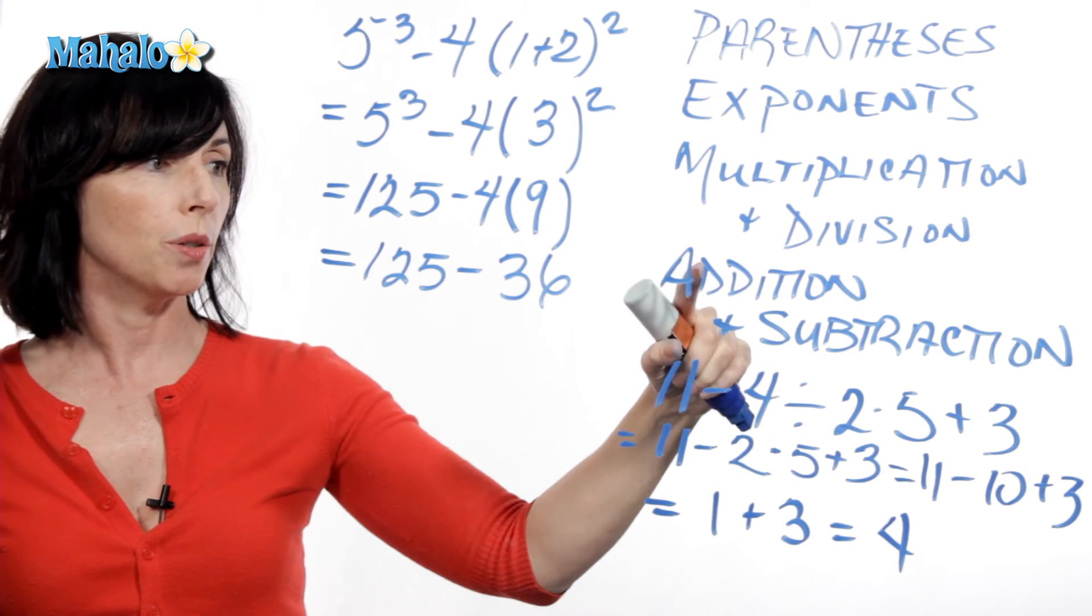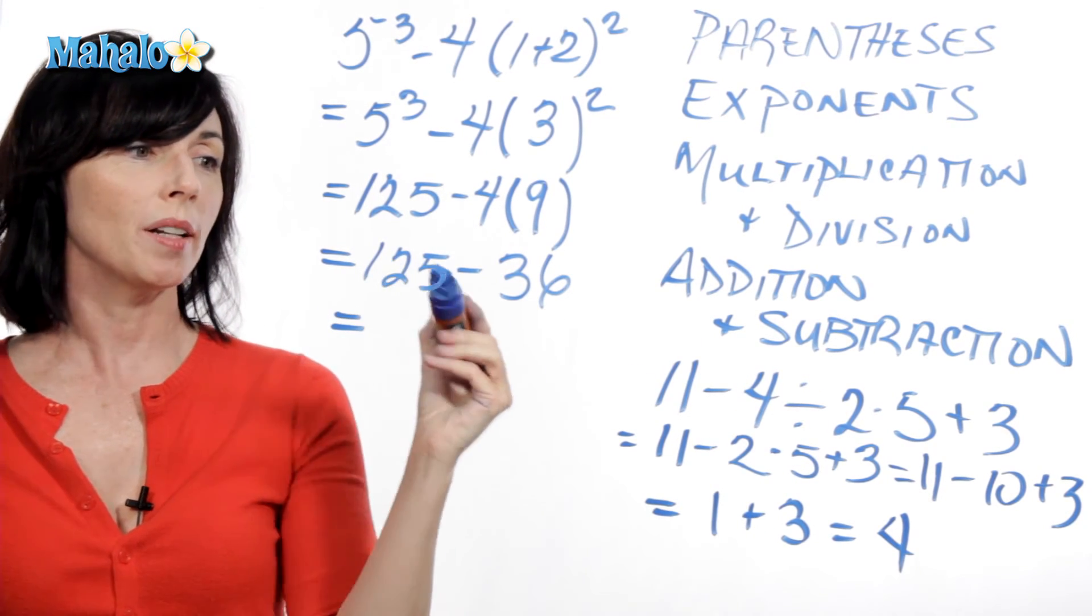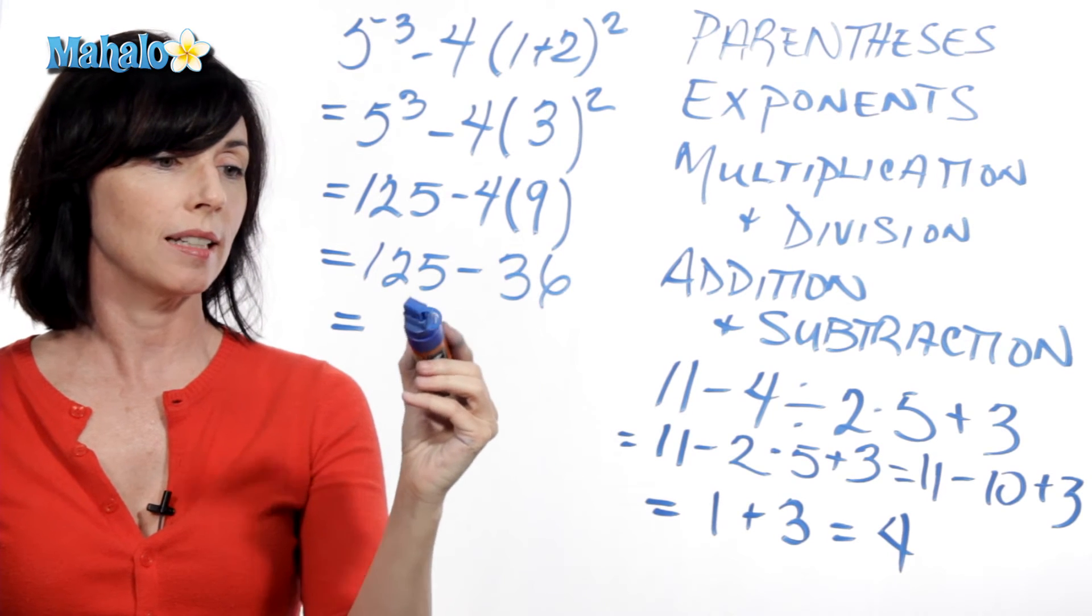And now we do addition and subtraction from left to right. We just have some subtraction here. 125 minus 36 is 89.